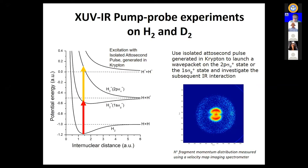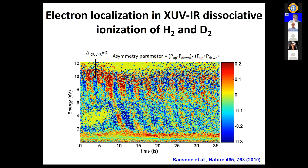At a variable time delay, a few-cycle IR probe laser resulted in the production of H+ ions measured on a velocity map imaging detector. This detector projected the ions on a 2D detector where position encodes velocity, giving us access both to the kinetic energy of the ions and their direction of emission with respect to the laser polarization axis — the vertical axis in the image.